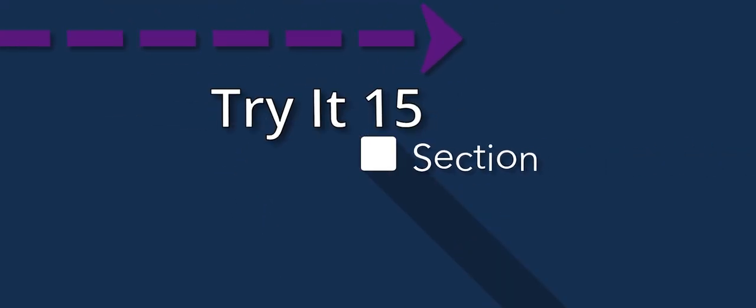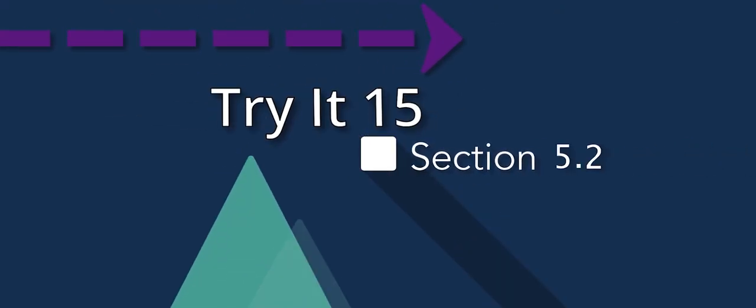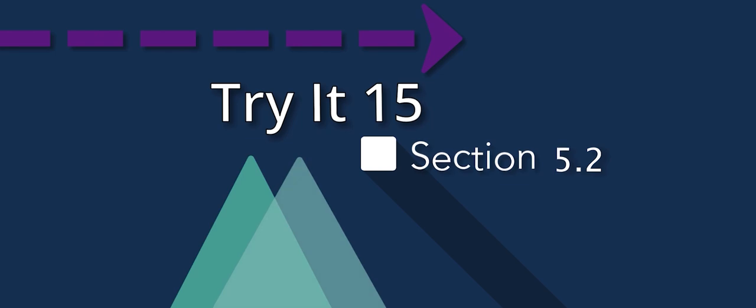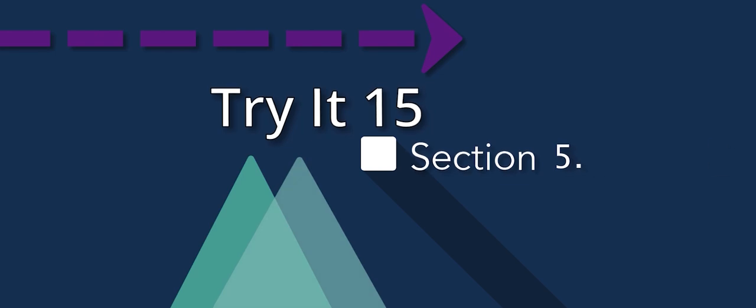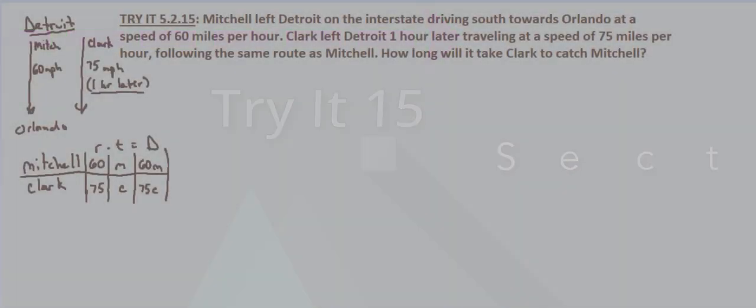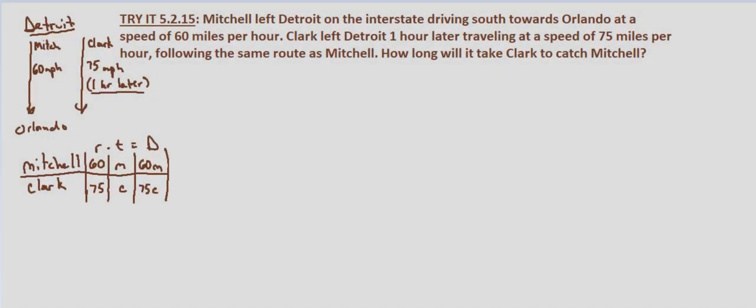With this problem we're told that Mitchell left Detroit on the interstate driving south towards Orlando at a speed of 60 miles per hour. Clark left Detroit one hour later traveling at a speed of 75 miles per hour following the same route as Mitchell. We're asked how long will it take Clark to catch Mitchell.